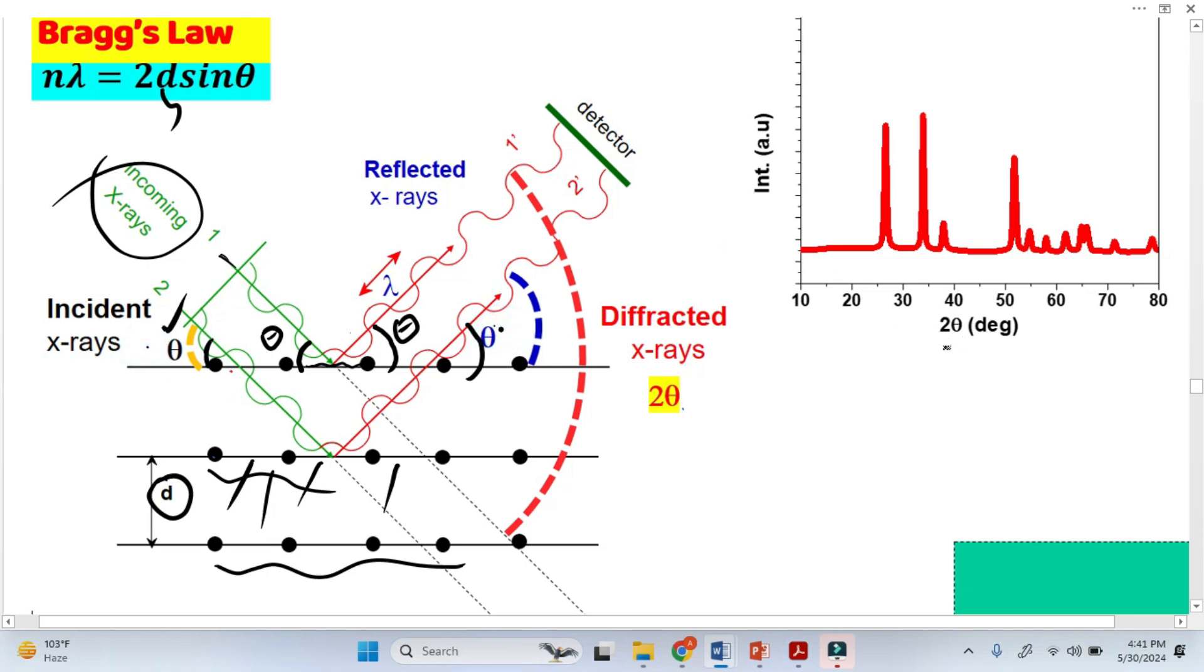In X-ray pattern, this two-theta is not reflected angle. This two-theta is not incident angle.